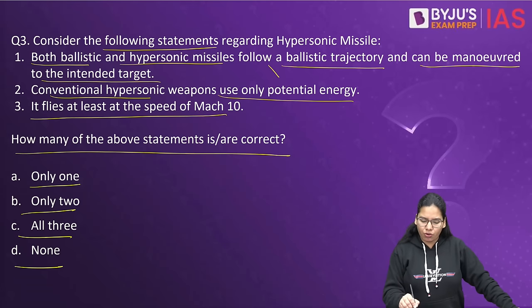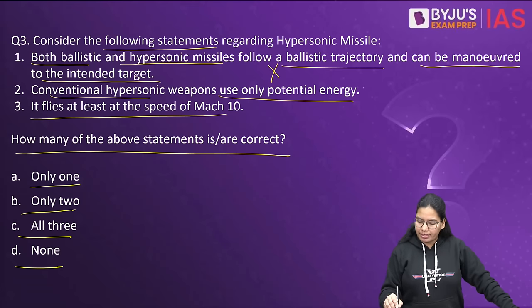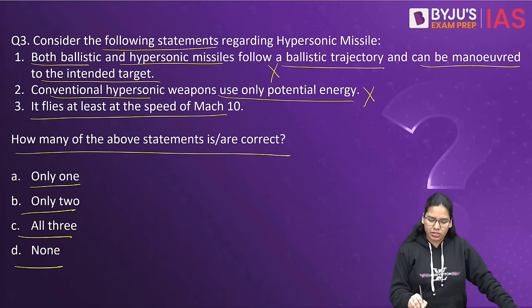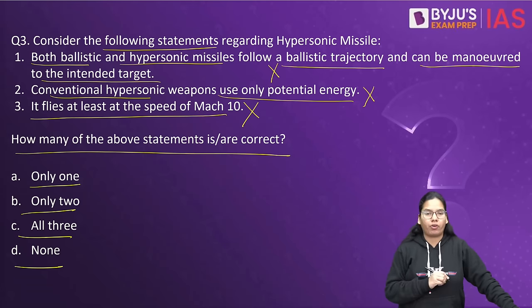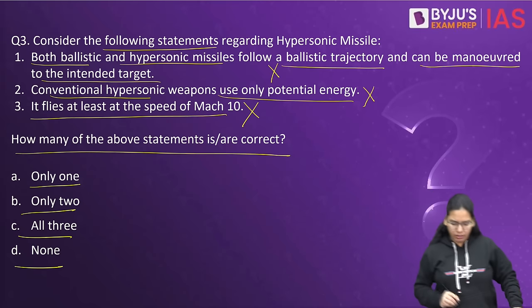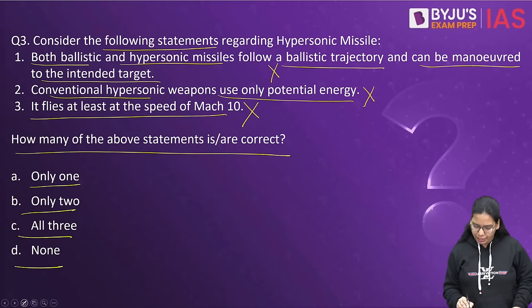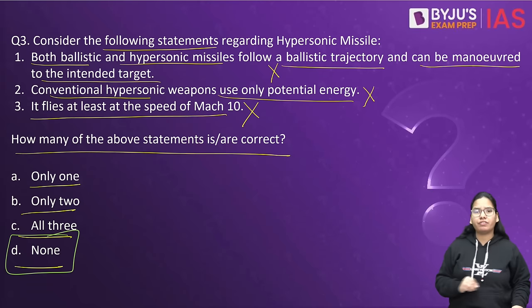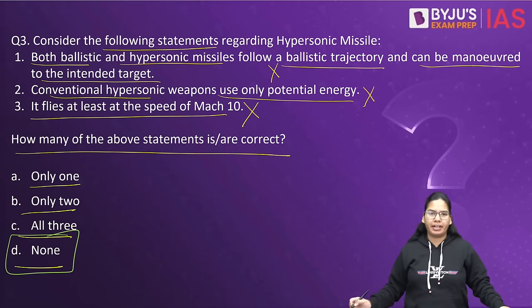The first statement is wrong. The second statement is also wrong. The third statement is also wrong. So the correct option here is none — none of these statements are correct.